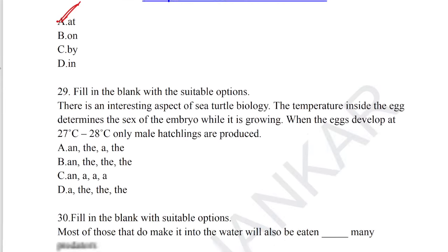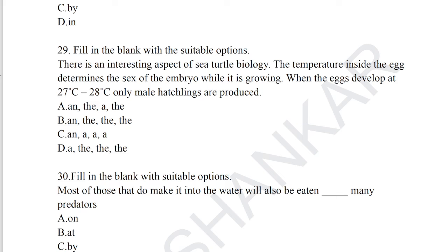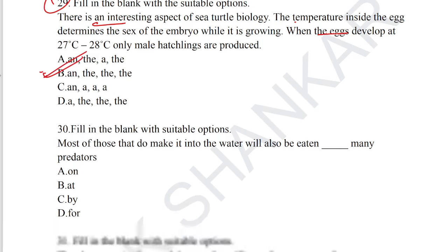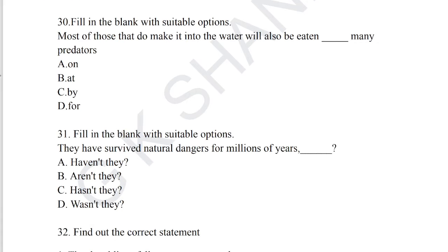Question number 29: fill in the blank. 'There is an interesting aspect of sea turtle biology — the temperature inside the egg determines the sex of the embryo while it is growing. When the eggs develop at 27 and 28 degrees, only male hatchlings are produced.' Option B is the correct answer for question number 29, which involves suitable articles. Question number 30: 'Most of those that do not make it into the water will be eaten by many predators.' Option C, many predators, is the correct answer.